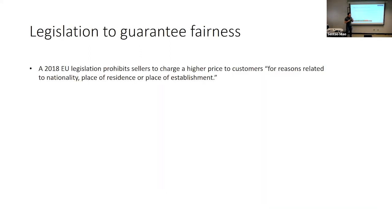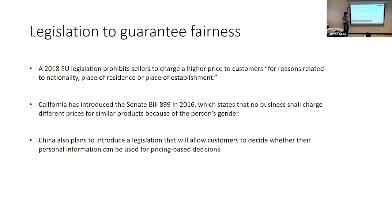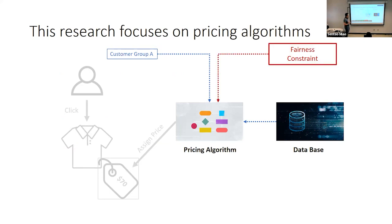As a result, there have been many legislative efforts to guarantee fairness in pricing. In 2018, EU legislation prohibits sellers from charging different prices based on nationality, place of residence, or establishment. California decided you cannot charge different prices based on gender. There has also been a notorious case from a major Chinese online shopping website that charged higher prices to loyal customers, determined by the algorithm without the company realizing it.